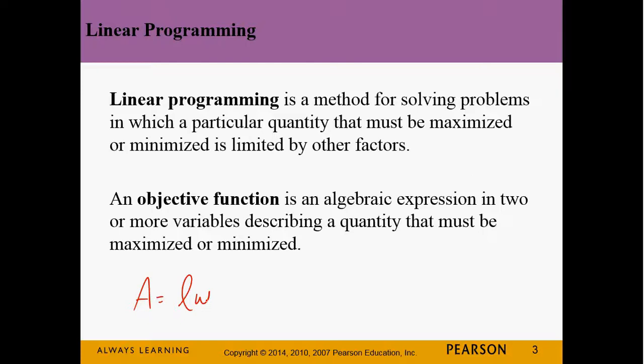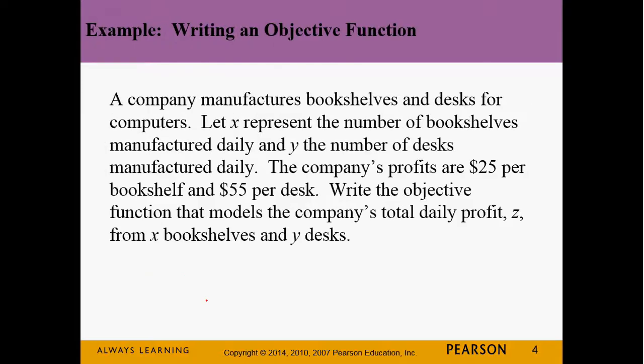Two variables, one function — that's going to be the objective function. It's what we are minimizing or maximizing. So we want to write an objective function. We're going to take this problem and step by step it all the way through linear programming. A company manufactures bookshelves and desks for computers. X is going to represent the number of bookshelves they make per day, and Y is going to be the number of desks they make per day.